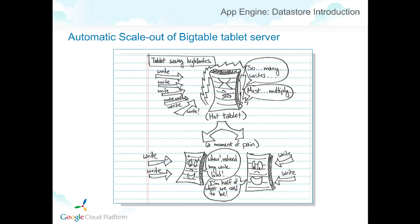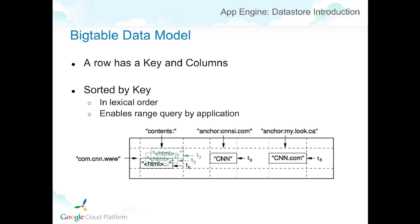This picture shows how Bigtable scales, which is really the key to scalability. When one shard of data — one tablet server — receives so many write requests that it needs to multiply, it automatically splits into two tablet servers, distributing the load. This happens automatically, so you don't need to worry about whether to increase the number of servers or tablets.